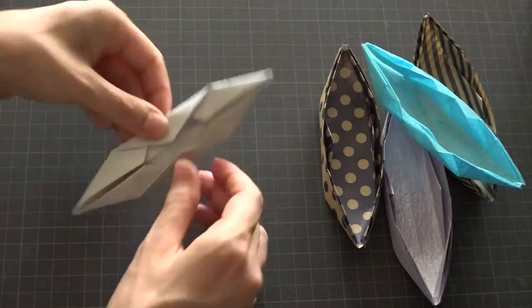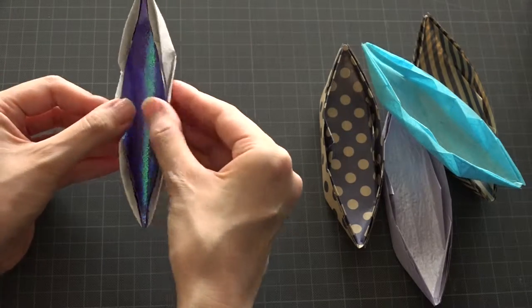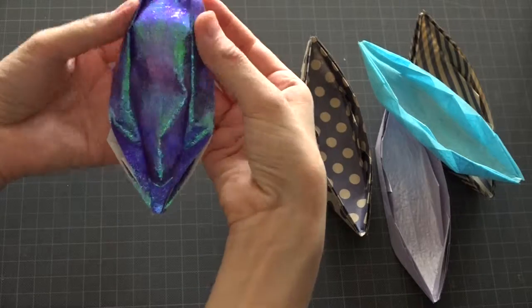Now, we are ready to form the bolt. Turn the origami inside out carefully. Be sure not to tear the paper.